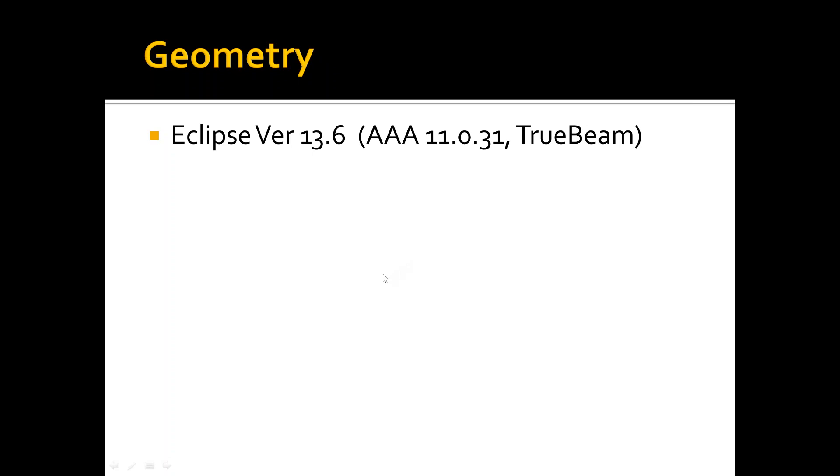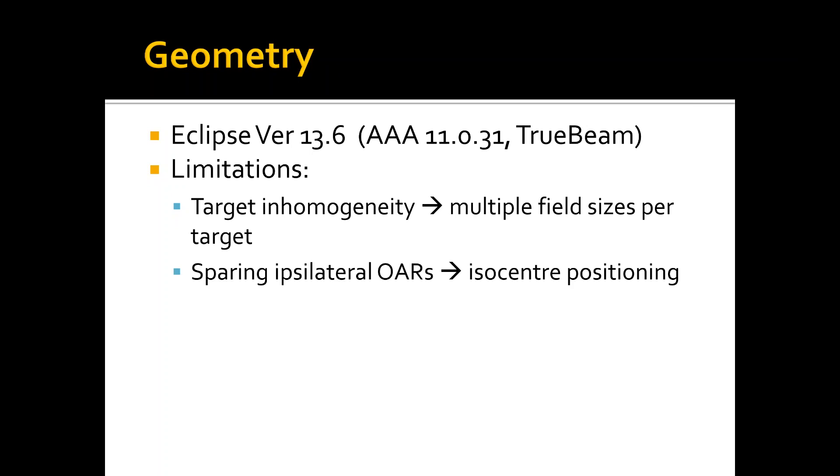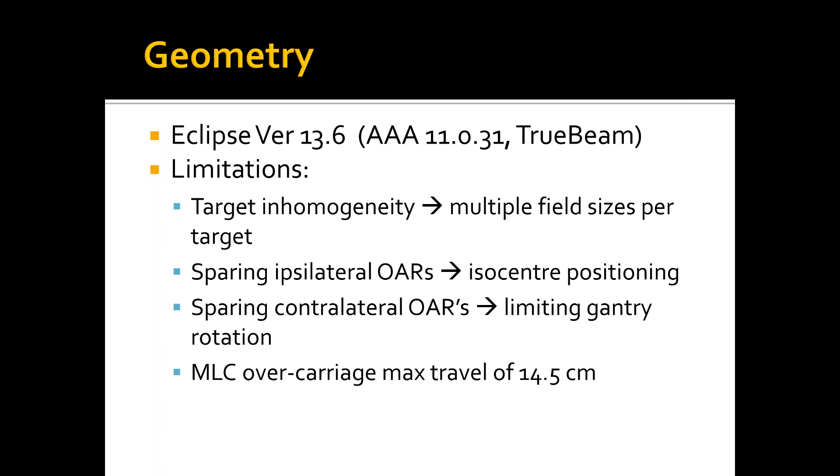My geometry comprises of Eclipse version 13.6 with AAA dose calculation algorithm together with the TrueBeam LINAC. Some limitations here. For target inhomogeneity, the fact that the target is comprised of supraclav, axilla, and left breast, this means that you have to use multiple field sizes per target. To spare the ipsilateral organ at risk, you have to be careful of your isocenter positioning. To spare the contralateral organ at risk, you have to limit gantry rotation. And we have this limitation of MLC overtravel maximum level of 14.5 cm, which gives you some limitation on your X field opening.